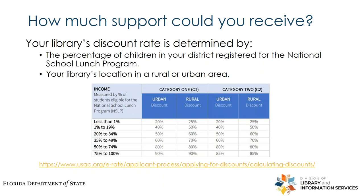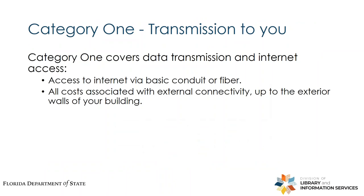I'll pause right now to see if anyone has any questions before we start talking about the nitty-gritty of the process. So there are two pots of funding for E-Rate: Category 1 and Category 2.